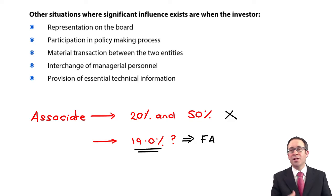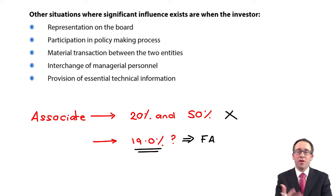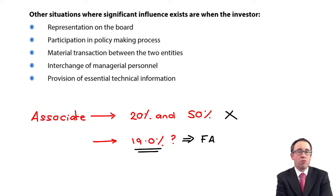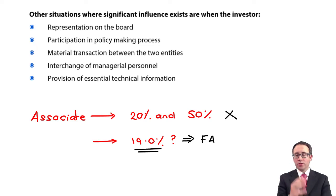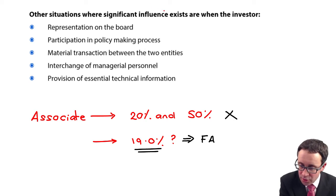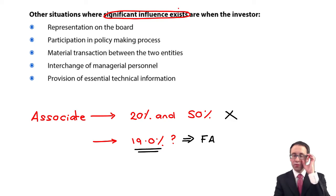A financial asset, by default, will be fair value through profit or loss, unless there is strategic intent to hold it, in which case it's fair value through other comprehensive income. But you just need to note these other situations where significant influence exists.